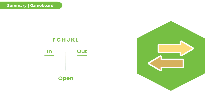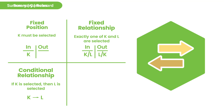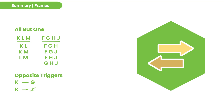In summary for in-out grouping games: the game board is a standard column chart with one column for in and one for out. If we don't know how many players are in and out, it's open; if we do, it's closed. The kinds of rules include fixed positions, fixed relationships, and most commonly conditional relationships — if-then rules. We need to be comfortable with conditional language cues. For creating frames, look for all-but-one subgroup scenarios or pairs of if-then rules with opposite triggers. That's it for today's lesson on in-out grouping games. Check out other lessons or visit us at LSATlab.com.